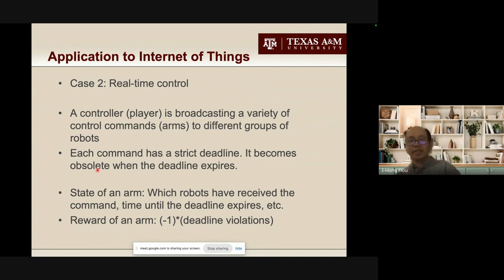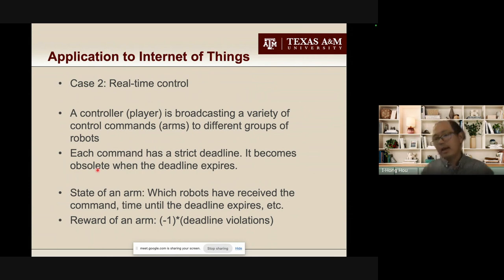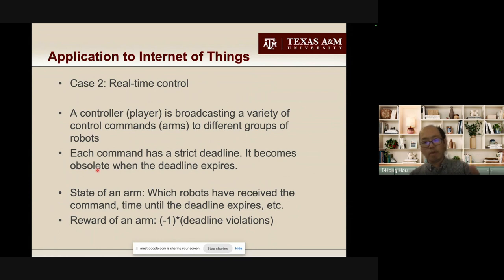We can also look at control. I get information from sensors because I want to control something. Consider that I'm a controller controlling a bunch of robots. I broadcast control commands to groups of robots — for example, telling all of them to take a particular action at 1 p.m. today. This command has a strict deadline: if I send the command to a robot at 2 p.m., the command is not useful at all. I need to deliver the command before 1 p.m.